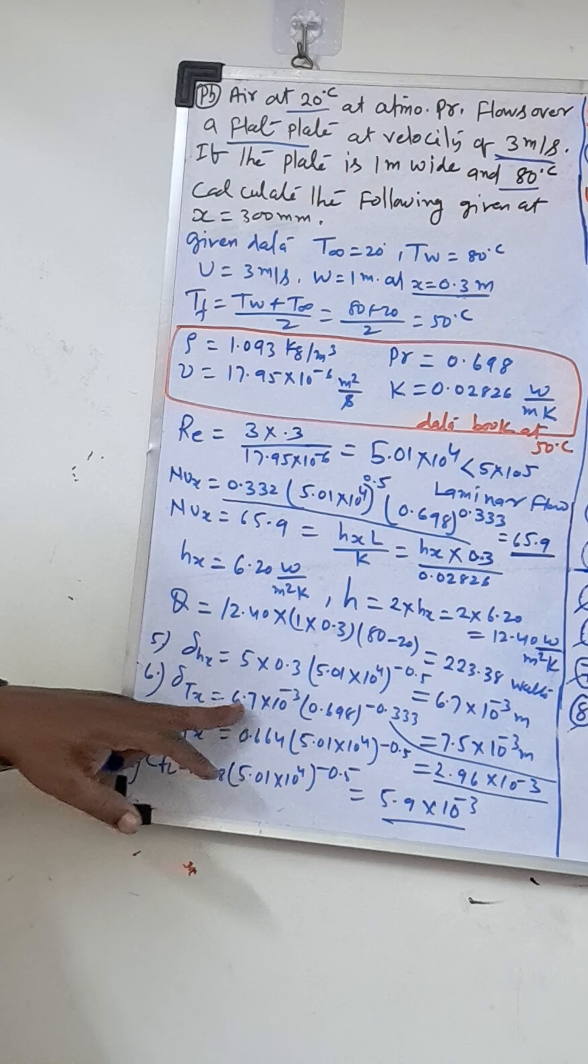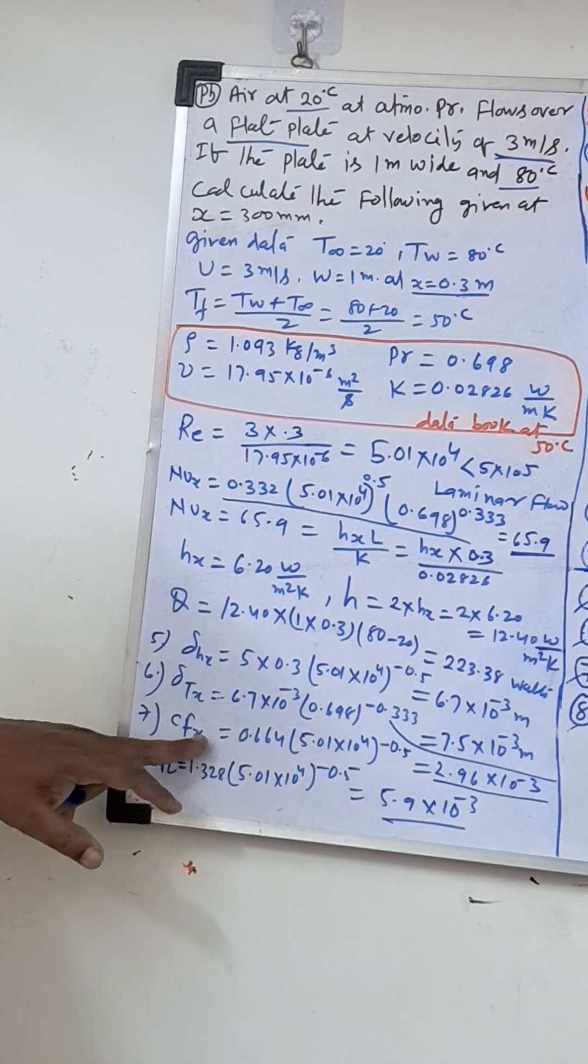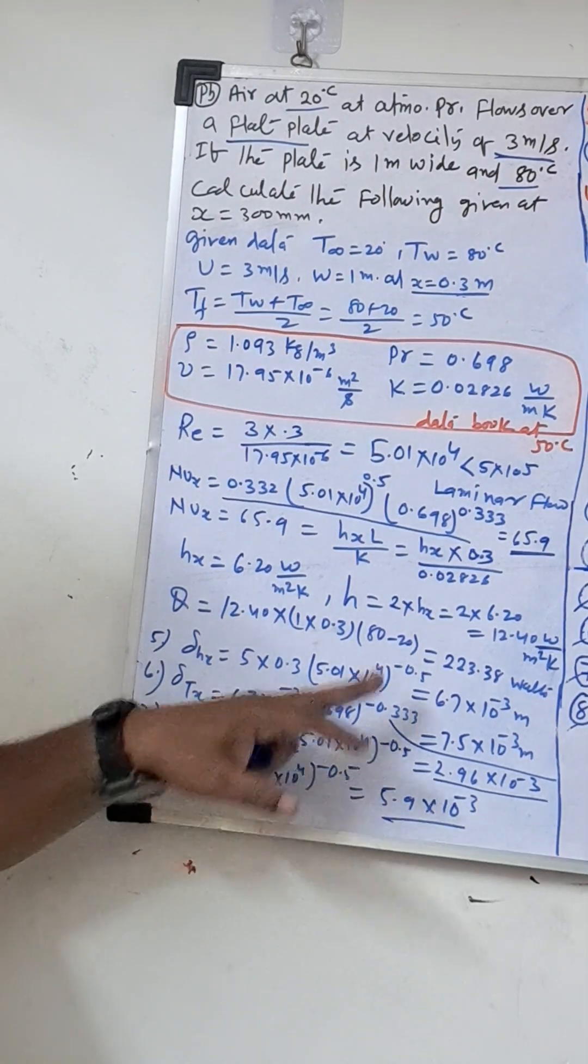This thermal boundary layer, then thermal hydrodynamic boundary layer, local friction coefficient, and average friction coefficient.